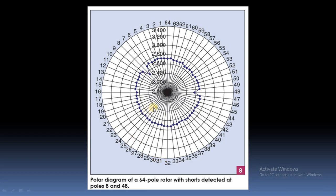Now here is another generator having the same number of poles — 64. We can see that two of the poles have less flux: pole number 8 and pole number 48 show a lesser amount of flux. That means pole number 8 and pole number 48 are having shorted turns. Whenever those poles pass through the probe, the probe determines the amount of flux generated, and it is plotted like this. Poles 8 and 48 showing less flux confirms they have shorted turns — this is how we determine which pole has shorted turns online, whenever the generator is generating power.